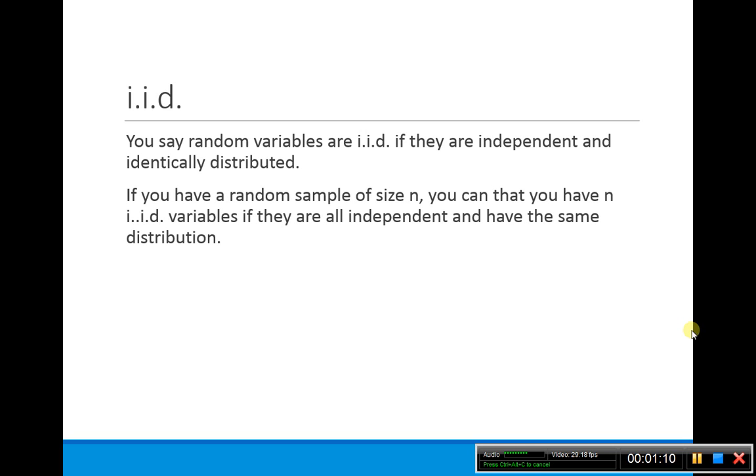If you have a random sample of size N, then you can say that you have N IID variables if they're all independent, so each one of them are independent, and they all have the same distribution.